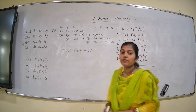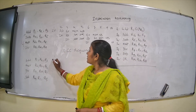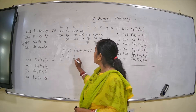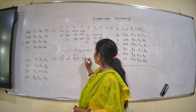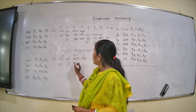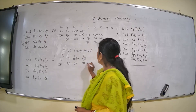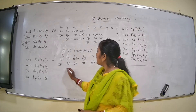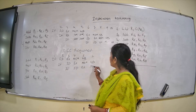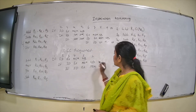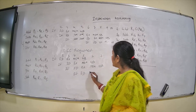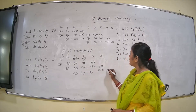Drawing the time-phase diagram for the reordered sequence: first instruction is IF, second IF and ID, third execute, fourth memory, fifth write-back. Then IF, ID, EX, memory, write-back. Then the next instruction: IF, ID, EX, memory, write-back. Completing at 8 clock cycles.